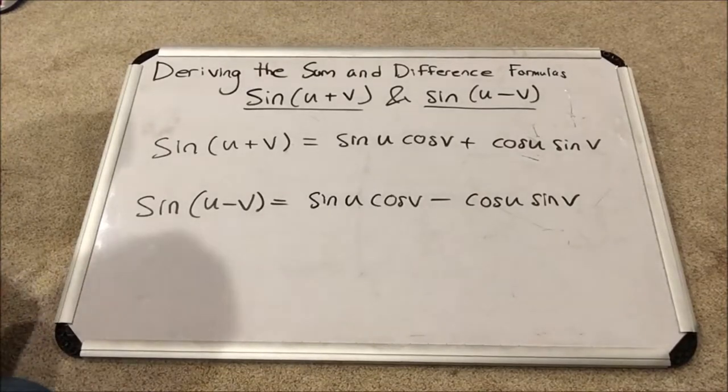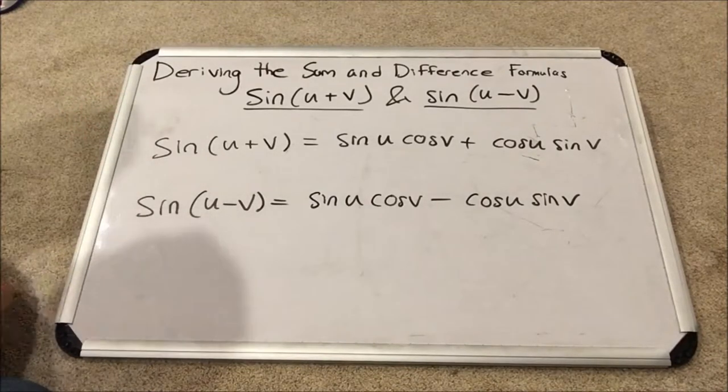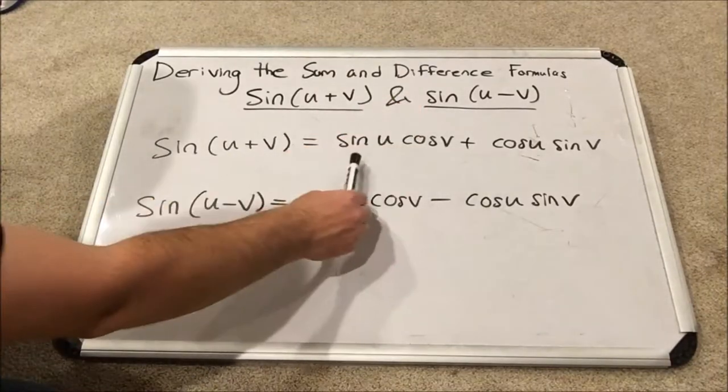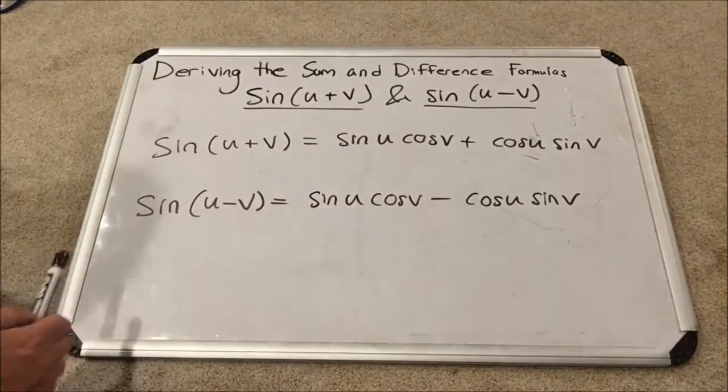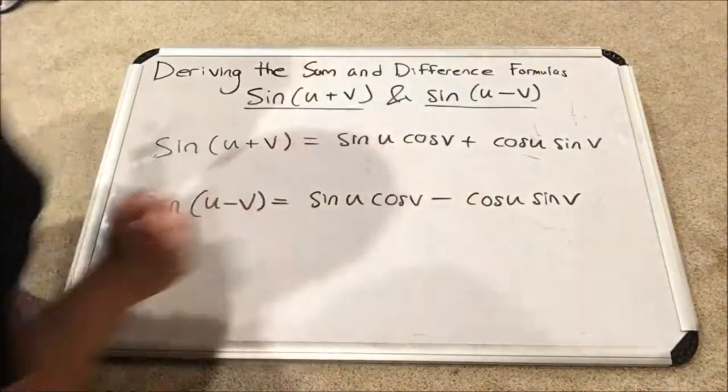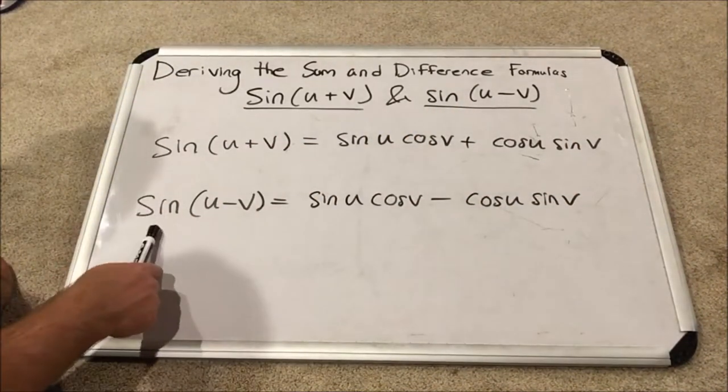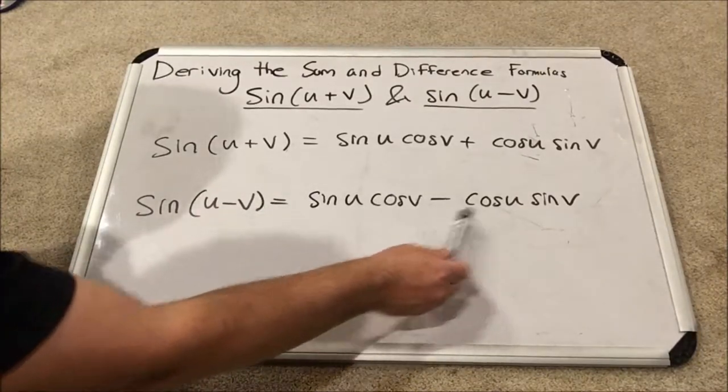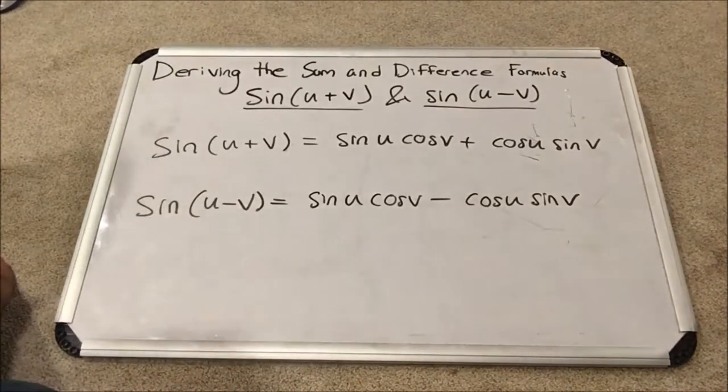The two formulas for the sine of u plus v and the sine of u minus v are: for u plus v, sine u cosine v plus cosine u sine v. And for sine of u minus v we have sine u cosine v minus cosine u sine v.